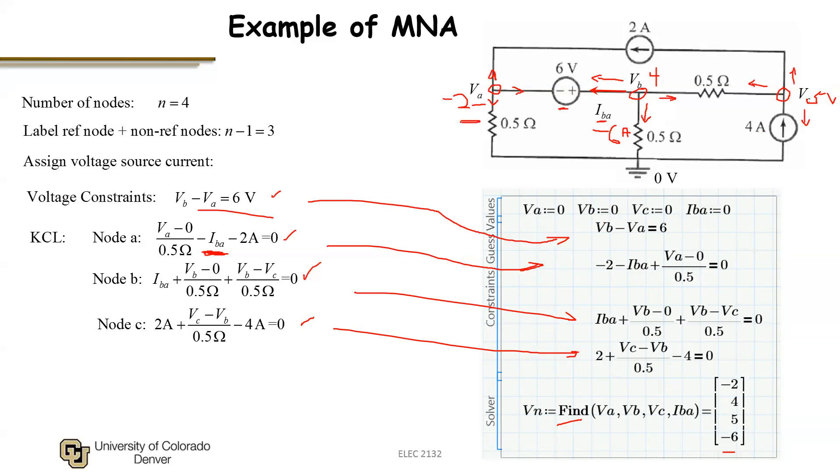So once I have calculated my node voltages and my voltage source current, I can now apply Ohm's law and or KCL to compute all branch currents in the network. And this problem would be solved. That is, I could find any quantity I would like in this network now. So that's an example of an MNA.